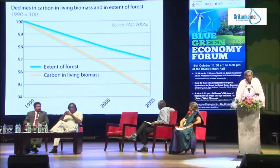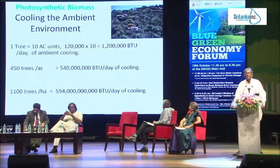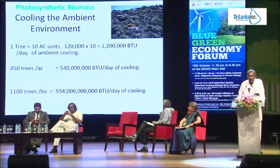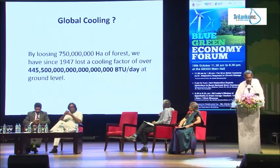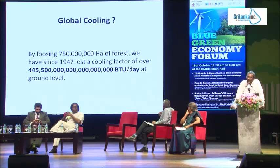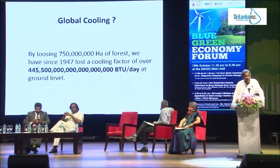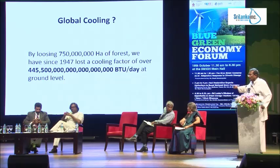What can these things do? Leaves cool the ambient environment around us. One large tree has leaves that provide a cooling factor of about 10 AC units working eight hours a day — about 1,200,000 British thermal units. If you look at what happened when we removed trees: from 1947, we lost 750 million hectares of forest. That means today we have lost a cooling factor of that magnitude per day on this planet. We are talking about global warming — this is what we lose when we have lost the forests of the earth.